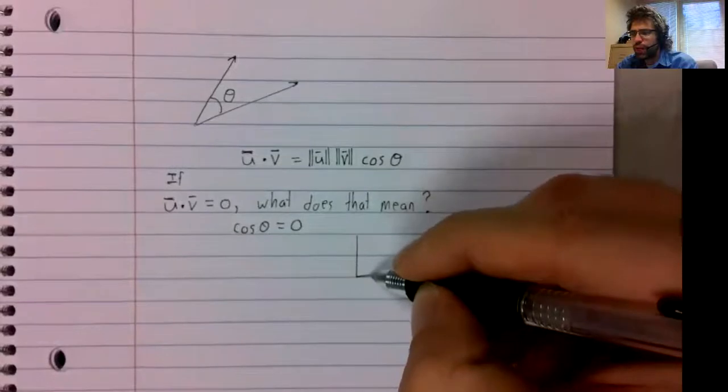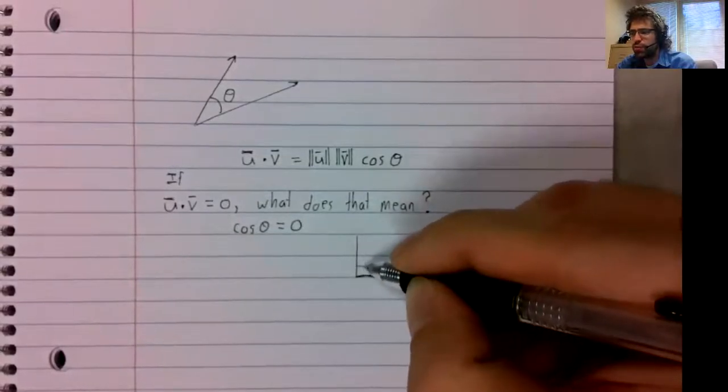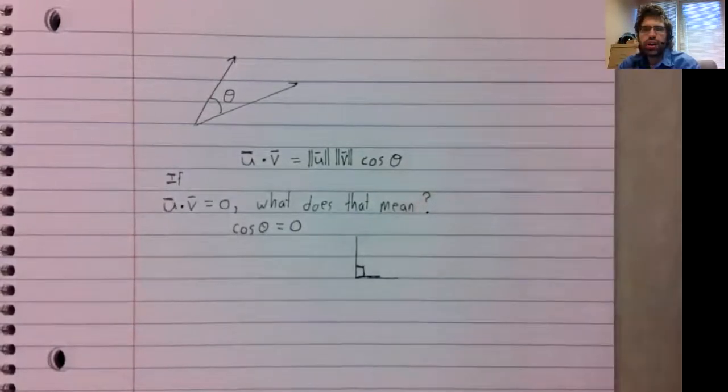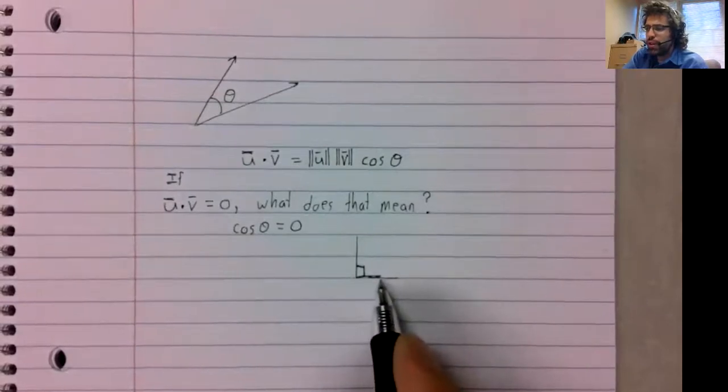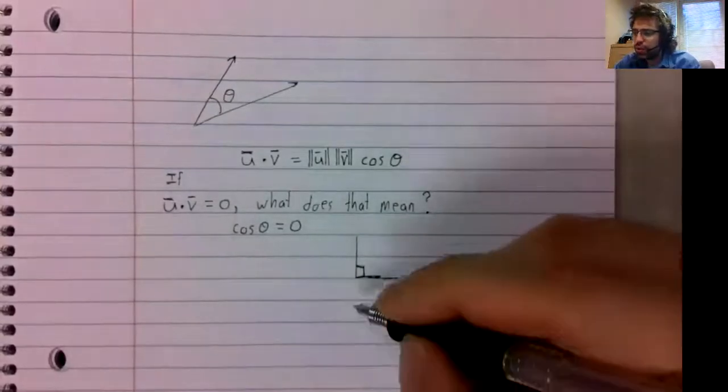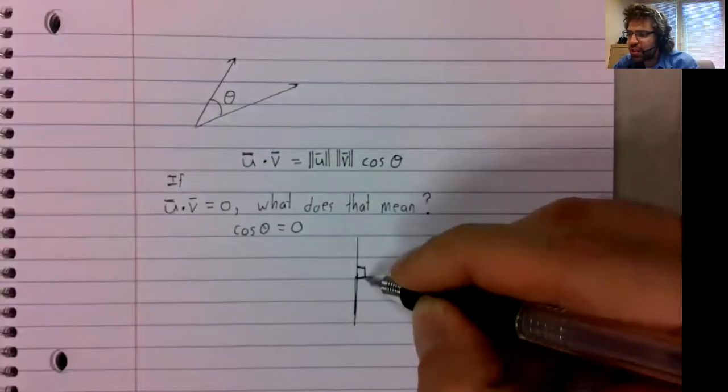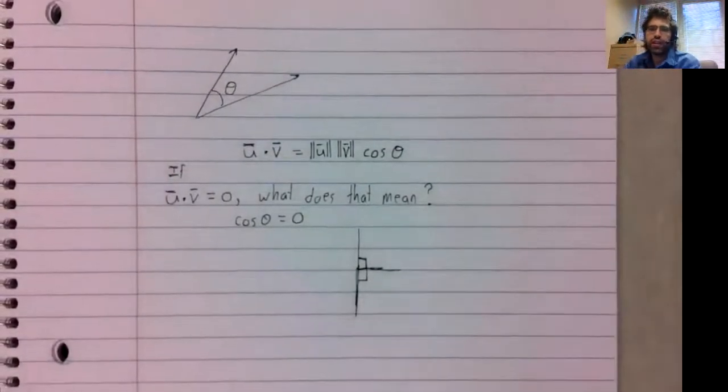And when is a cosine zero? The cosine of an angle is zero if that angle is 90 degrees, or something that has 90 degrees as its reference angle.